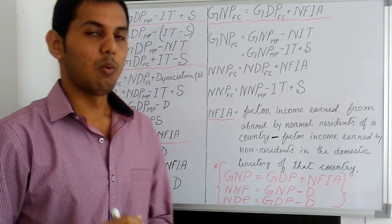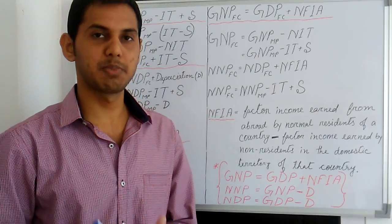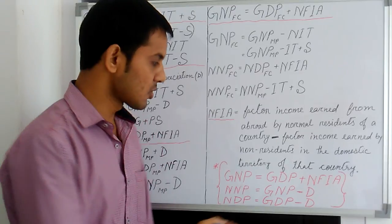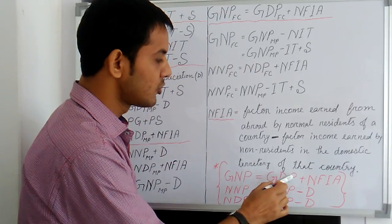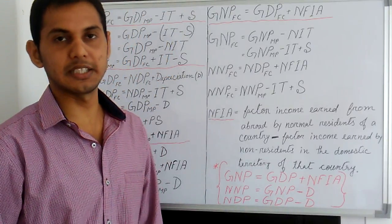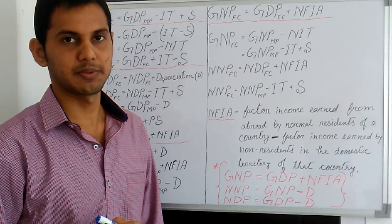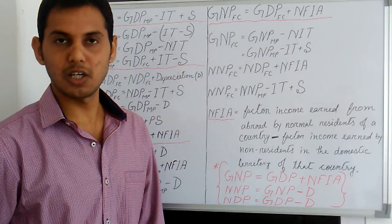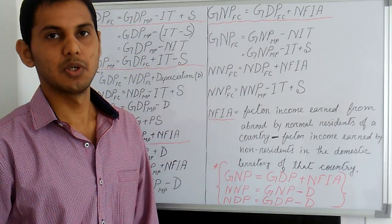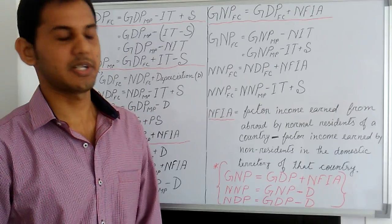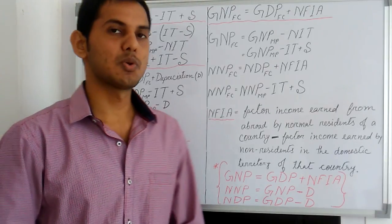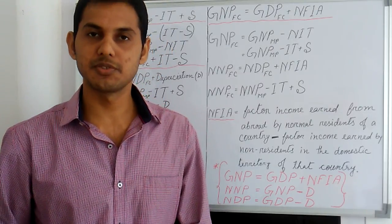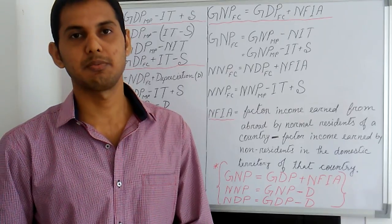The main difference between GNP and GDP is that GDP is a geographical concept related to domestic territory, while GNP is a national concept as it relates to normal residents. I hope you enjoyed this lesson. Remember to subscribe to this channel and I will see you in the next video.